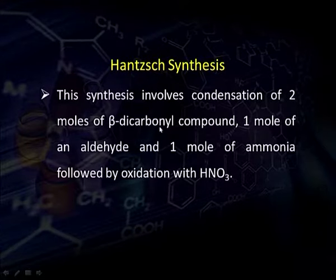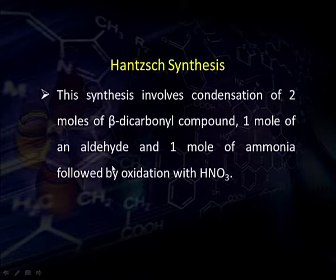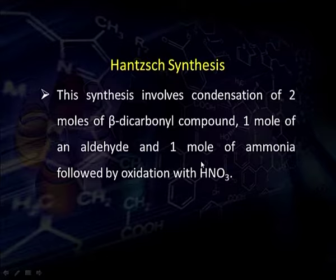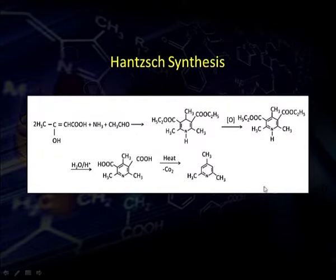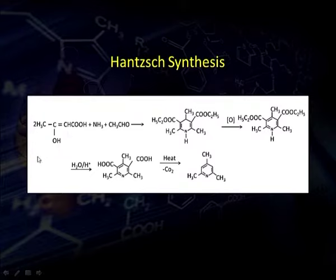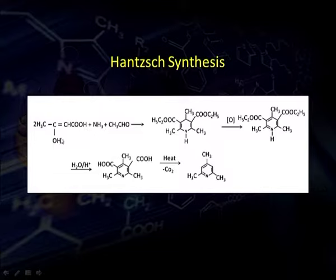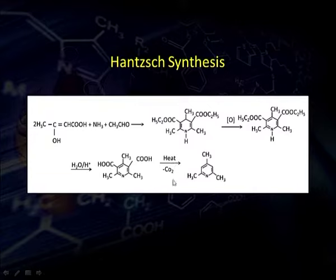Important derivatives of pyridine can be synthesized by the Hantzsch synthesis. This synthesis involves condensation of two molecules of a beta-carbonyl compound, one molecule of an aldehyde, and one molecule of ammonia; the resulting product is then oxidized with concentrated nitric acid. For example, to prepare 2,4,6-trimethylpyridine, we take two molecules of acetoacetic ester — in which the enol form is reactive — and treat it with ammonia and acetaldehyde to get its diester. When heated, carbon dioxide is evolved and we get 2,4,6-trimethylpyridine.